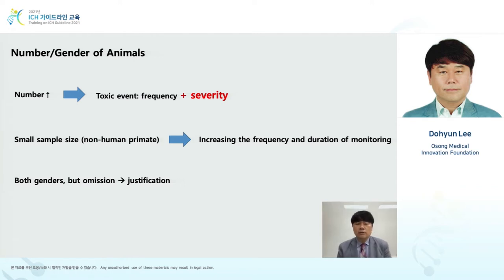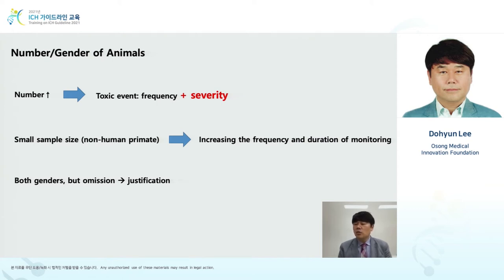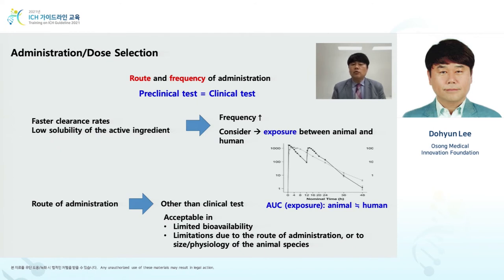Regarding the number and gender of animals: when the number is higher, it's better, but there is not an unlimited number of animals available. With a higher number, the frequency and severity of toxic events can be more accurately assessed. But for non-human primates, sample size is minimized. In this case, the frequency and duration of monitoring must be increased to compensate for the small sample size.